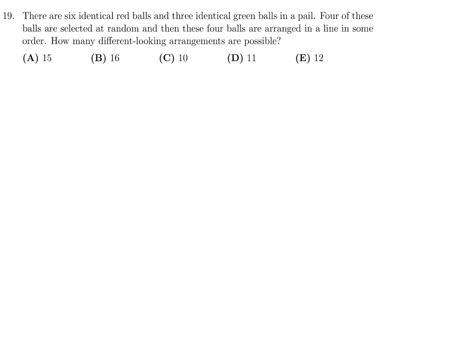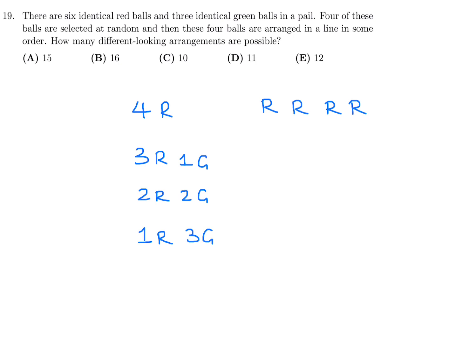3 identical red balls and 3 identical green balls are in a pail. 4 balls are selected at random and arranged in a line. How many different-looking arrangements are possible? The cases are: 4 red, 3 red and 1 green, 2 red and 2 green, or 1 red and 3 green — we can't have 4 green since there are only 3. For 4 red there's only 1 arrangement. For 3 red and 1 green there are 4 arrangements. For 2 red and 2 green there are 6 arrangements.